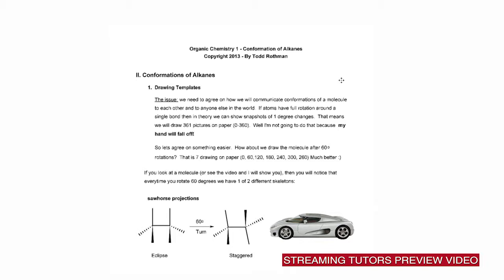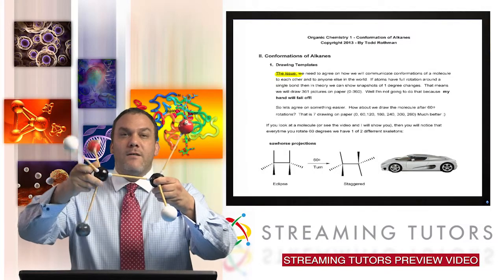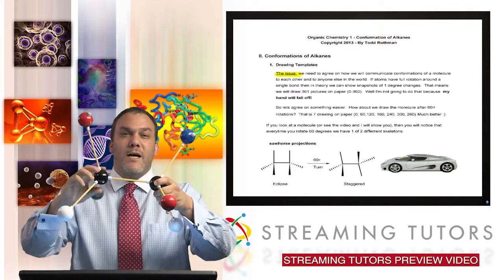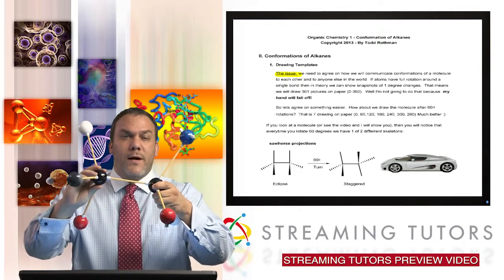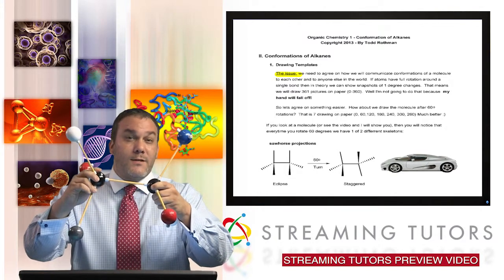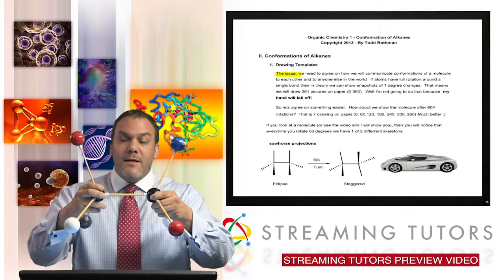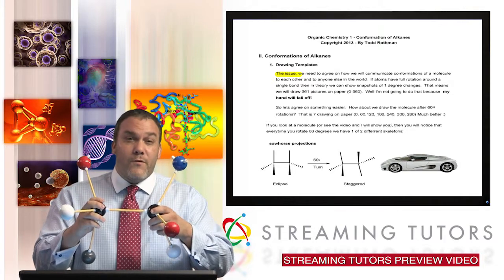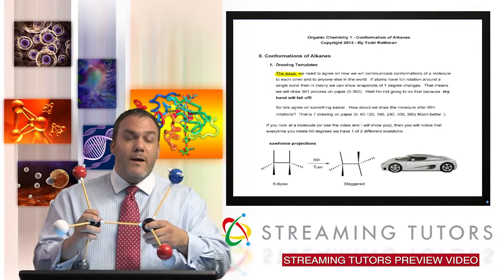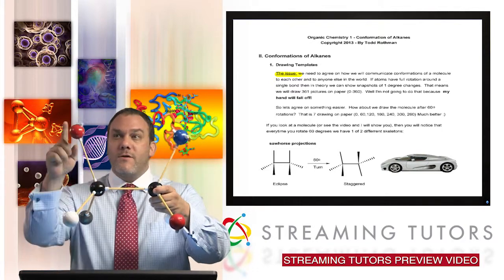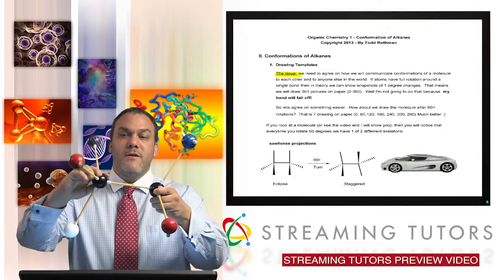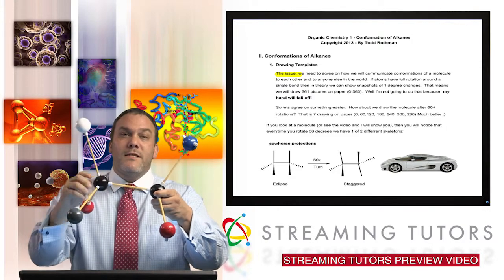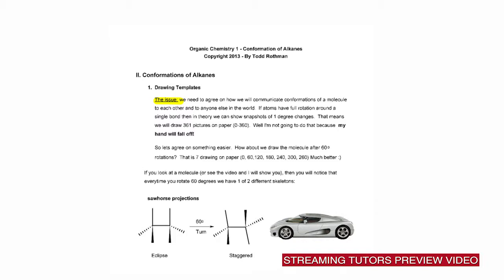There is an issue we have to first address: how do we draw these on paper? Looking at this molecule, there's constant rotation. The question is how often do I take pictures — every degree, every 60 degrees, every 90 degrees? We need to come up with a standard. Fortunately it's not every degree, because that would be 361 pictures. Instead we rotate every 60 degrees. So here with the blue and the red, if I turn it 60 degrees it changes position, another 60 degrees it changes again, and so on.